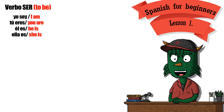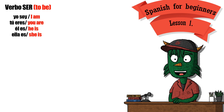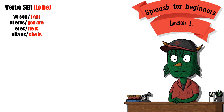Now we are going to see the verb to be in Spanish. We have the shape here. Verbo ser en español. Yo soy — I am. Tú eres — You are. Él es — He is. She is — Ella es.